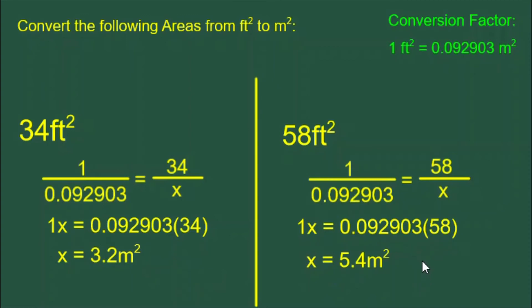You may notice that there's a shortcut here. All we have to do is take the big number from the conversion factor, the 0.092903, and multiply it by the number in the question. That's what we're really doing. But showing the proportion allows us to show all of our calculations.